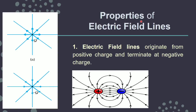Let us start with the properties of electric field lines. First property says electric field lines originate from the positive charge and terminate at the negative charge. For a positive source charge, lines move outward because the test charge is always positive so the force is in the outward direction. For a negative charge, the field goes inside. So lines start from the positive charge and end at the negative charge — this is the very first property.